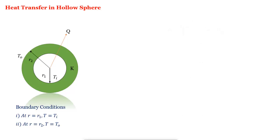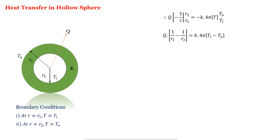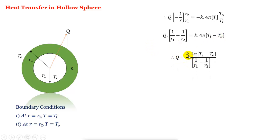Applying the limits gives Q·(1/R1 minus 1/R2) equal to K·4π·(Ti minus To), where the minus sign has been moved inside the bracket. Rearranging: Q equal to K·4π·(Ti minus To) / (1/R1 minus 1/R2). Performing cross-multiplication on the denominator: (1/R1 minus 1/R2) becomes (R2 minus R1)/(R1·R2). So Q equal to K·4π·(Ti minus To)·R1·R2 / (R2 minus R1).